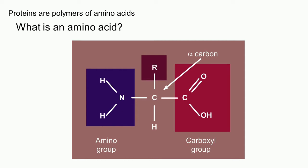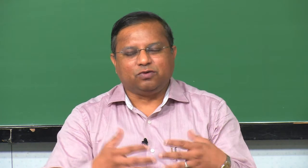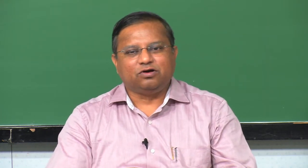This is called an amino acid. You have an amino group here and a carboxylic acid group here. The amino group is an NH2 shown in blue, and the carboxyl group is a COOH shown in red. These two are attached to opposite ends of the alpha carbon. In addition, you have a hydrogen atom at the third bond and something called an R group as the fourth bond. Carbon valency is 4 — so amino group, carboxylic acid group, H, and various R groups. Differences in the R groups are what give rise to the different types of amino acids.